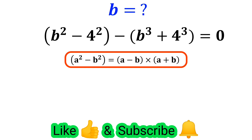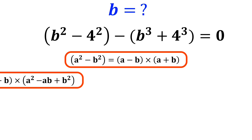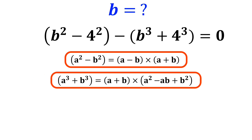Also, according to the sum of cubes identity, a cubed plus b cubed equals a plus b times a squared minus ab plus b squared.